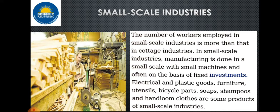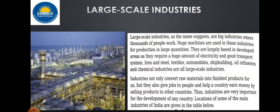Products of small scale industries include electrical and plastic goods, furniture, utensils, baskets, bicycle parts, soap, shampoos, handloom, and clothes. These are the products of small scale industries.